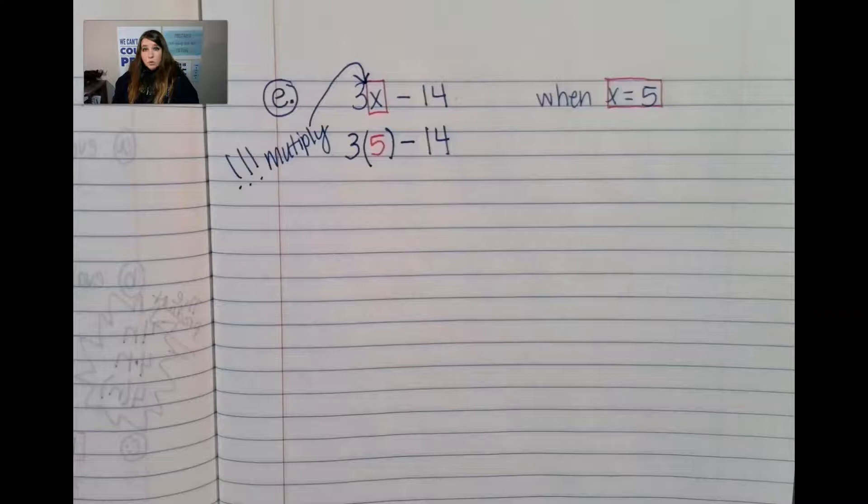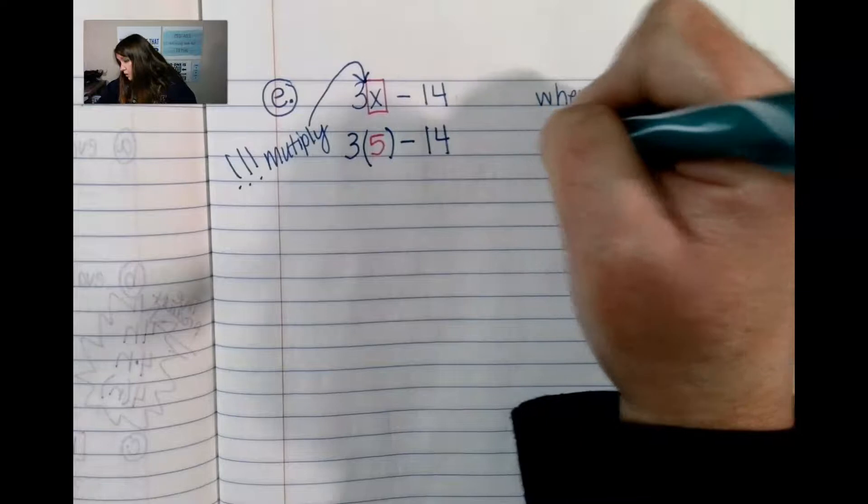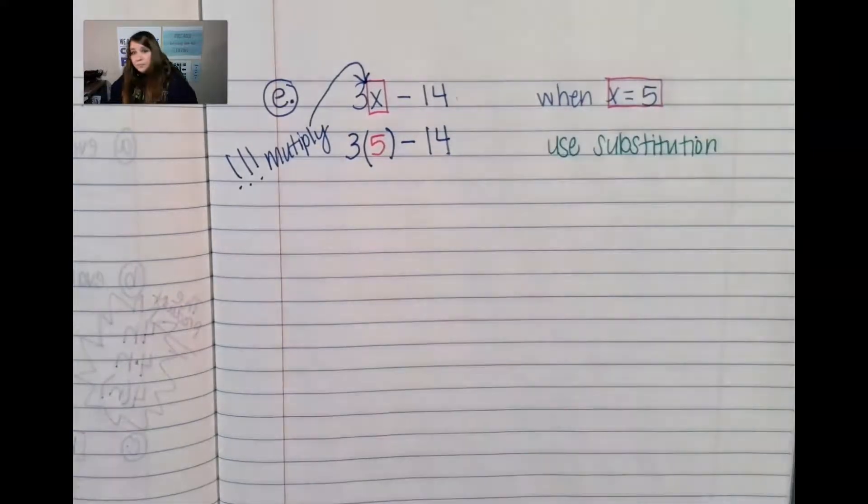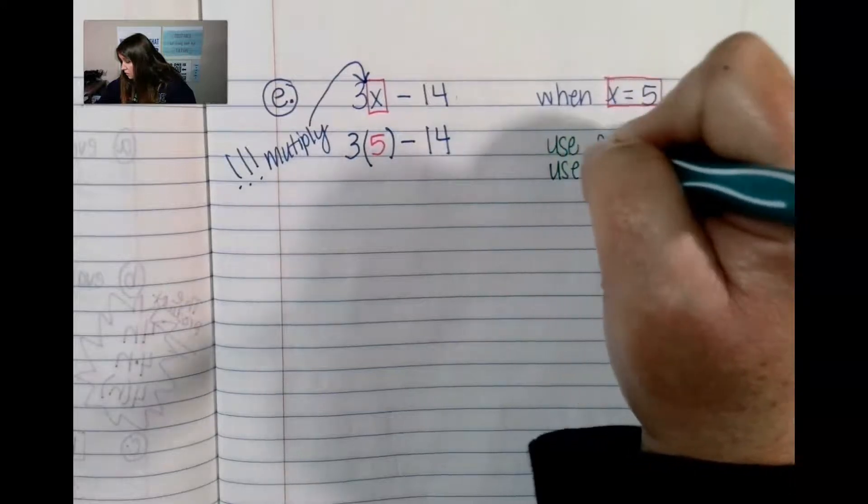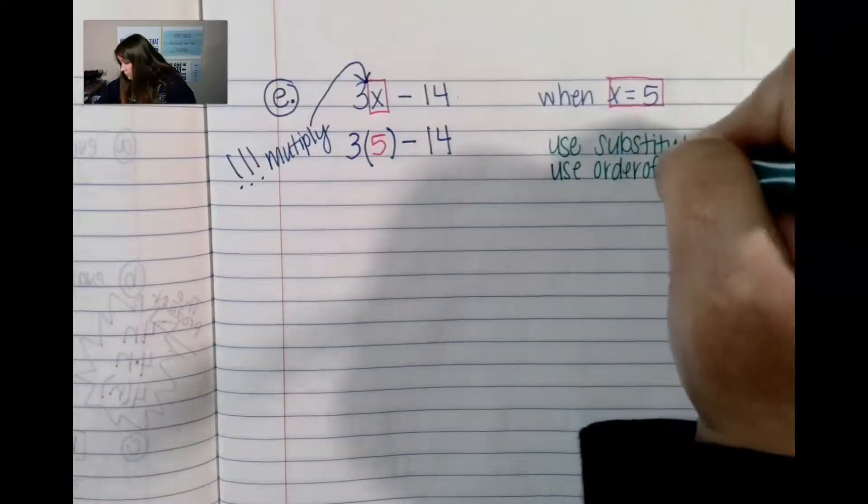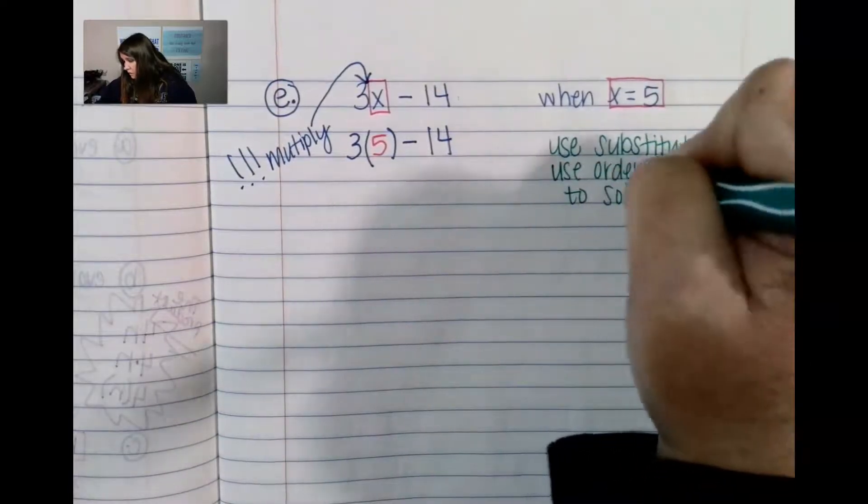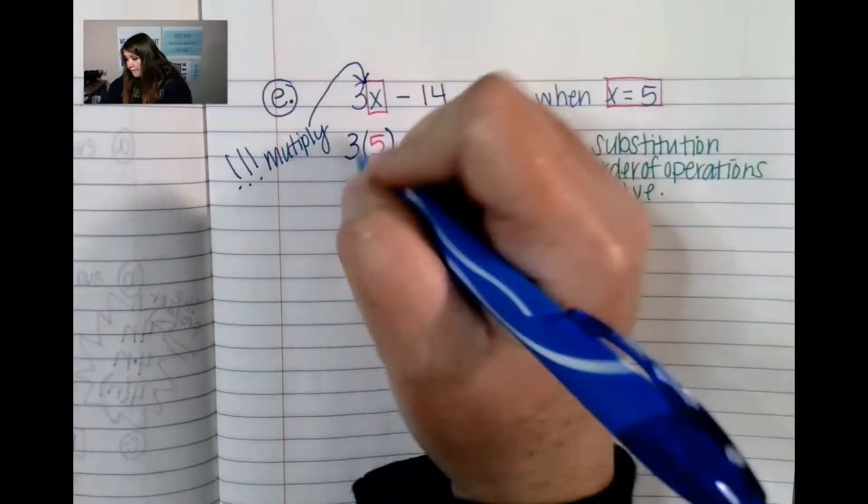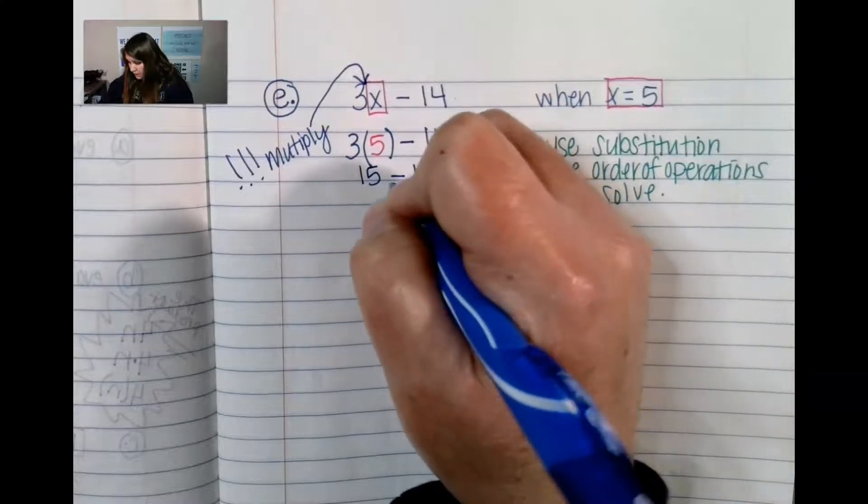Now we're ready to use order of operations and then we're ready to solve. Step one. Use substitution. Step two. Use order of operations to solve. That's it. That's all you do on these problems. So, 3 times 5 is 15 and 15 minus 14 gives us 1.